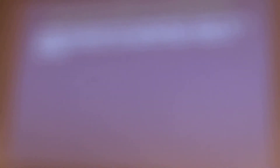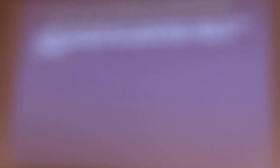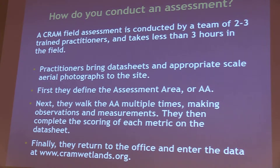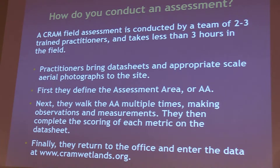How do you conduct a CRAM assessment? It takes a team of two to three trained practitioners, less than three hours out in the field start to finish — dependent upon the wetland type, size, and complexity. Field practitioners go out with their data sheets and appropriate scale air photos. First they define the assessment area, or AA, which is the footprint on the ground where the assessment takes place. Next they walk the AA multiple times, make observations and measurements, complete scoring on data sheets, then return to the office and enter that data into cramwetlands.org.